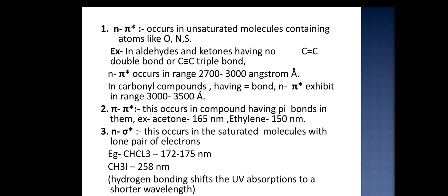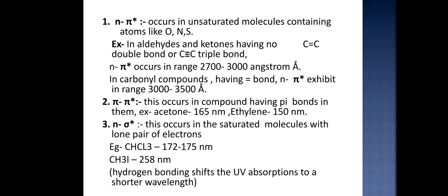These are the transitions. First is n to pi anti-bonding orbital, which occurs in unsaturated molecules containing atoms like oxygen, nitrogen, sulfur, etc. Examples include aldehydes and ketones that are having double bonds or triple bonds. n to π* occurs in range 2700 to 3000 angstrom. In carbonyl compounds having double bonds, n to π* exhibit in range 3000 to 3500 angstrom.